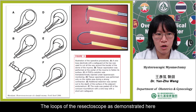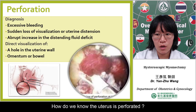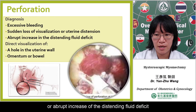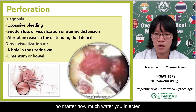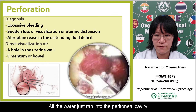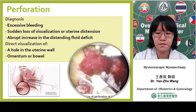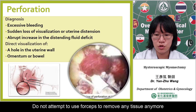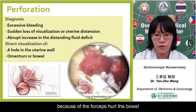These are the loops of the resectoscope and the procedure as mentioned before. How do we know the uterus is perforated? Signs include excessive bleeding, sudden loss of visualization, or abrupt increase of the distending fluid deficit. You might not be able to visualize the uterine cavity no matter how much water you inject — because all the water is running into the peritoneal cavity. Sometimes you can directly visualize the hole in the uterine wall and see bowel or omentum. When you suspect perforation, please abandon the procedure — do not attempt to use forceps to remove any tissue, as bowel perforation has occurred because of forceps injuring the bowel.